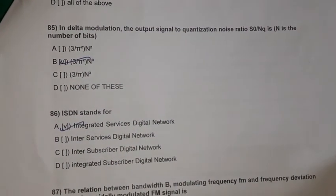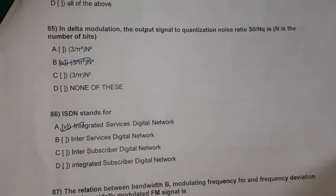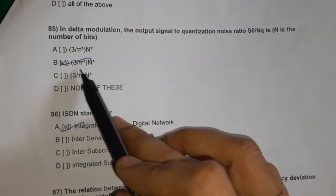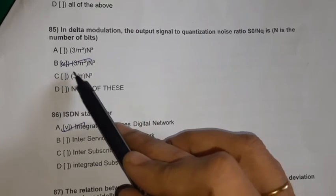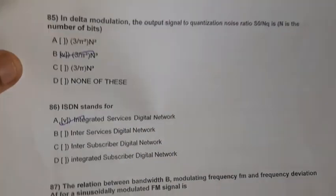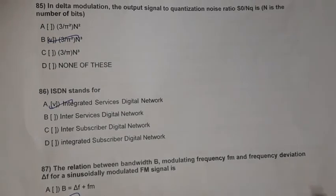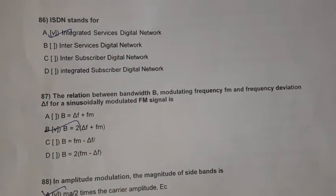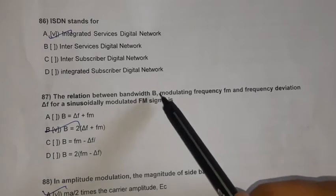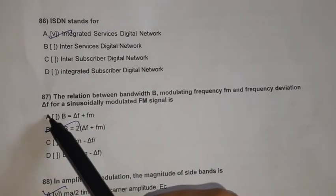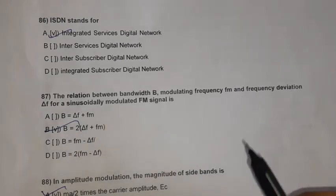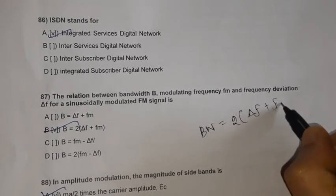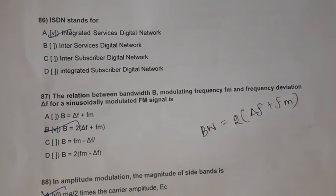Question 85: In delta modulation, the output signal-to-quantization noise ratio S0/NQ equals 3/π² × NQ, where N is the number of bits. Question 86: ISDN stands for Integrated Services Digital Network. Question 87: The relation for bandwidth of a sinusoidally modulated FM signal is: bandwidth B equals 2 × (delta-F + FM).